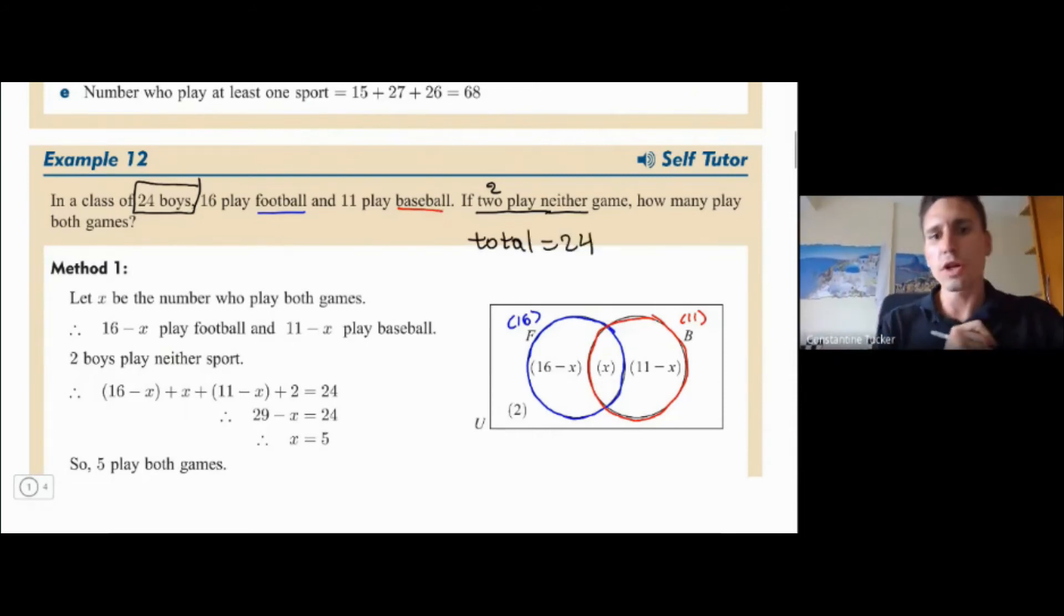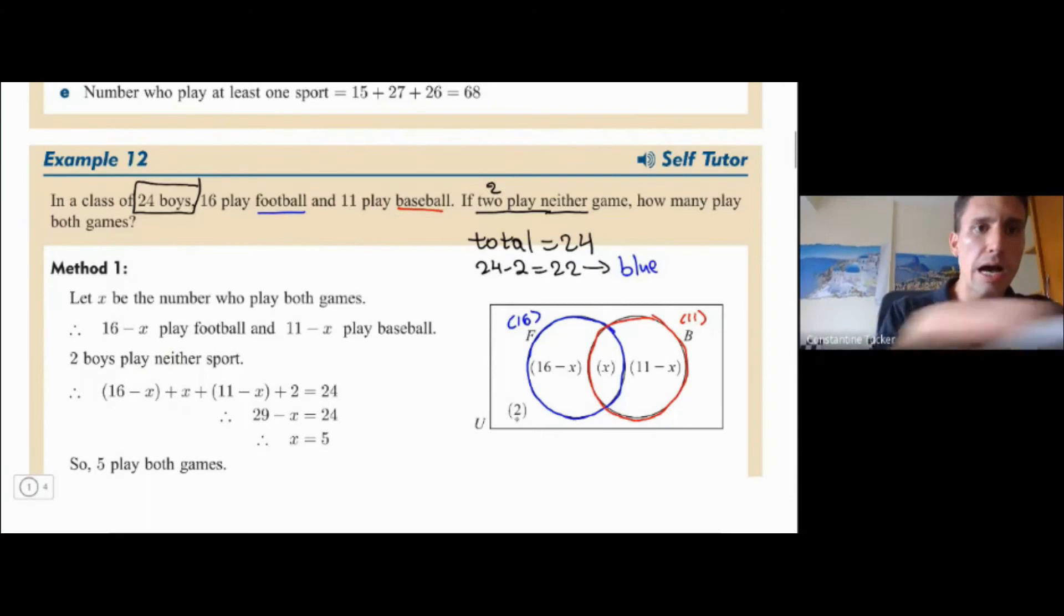Okay. What else have they given us? They've given us that two here, which is the two that play none, no sports neither. So if you do 24 minus two, that gives you 22. So that would be the blue and the red circle all together. So I'm going to put it this way blue and all of the red all together. So we know that everything in there should be 22.